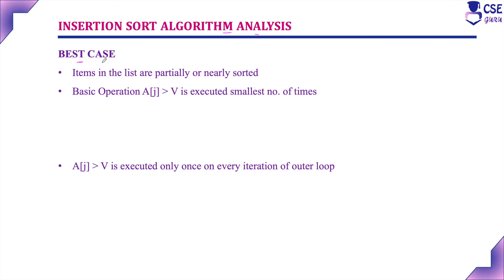The best case efficiency, considering the case where items in the list are partially or nearly sorted — that is, the given array is almost sorted — will give the best case efficiency because it will give the minimum number of comparisons. That is, the basic operation A[j] greater than B is executed the smallest, minimum number of times.